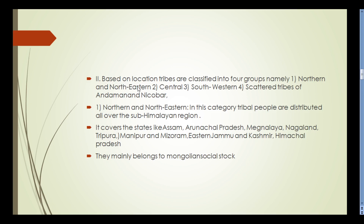Based on location, tribes are classified into four groups: Northern and Northeastern, Central, Southwestern, and tribes of the Andaman and Nicobar Islands. The Northern and Northeastern category covers the sub-Himalayan region, including the states of Assam, Arunachal Pradesh, Meghalaya, Nagaland, Tripura, Manipur, Mizoram, Eastern Jammu and Kashmir, and Himachal Pradesh. These tribes mainly belong to the Mongolian social stock.